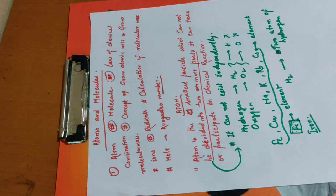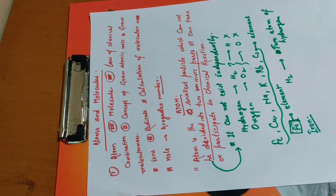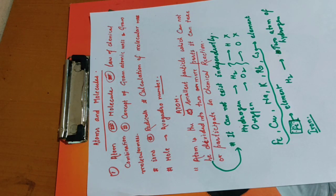Atom ki baat karein ya molecule ki baat karein - molecule is also the smallest particle of any substance. Then what is the difference? The difference is: atom cannot exist independently, while molecule exists independently.